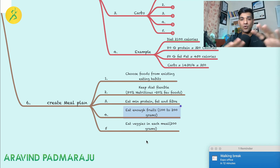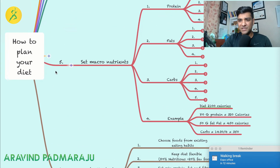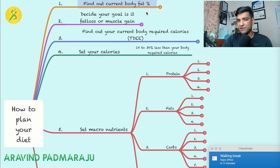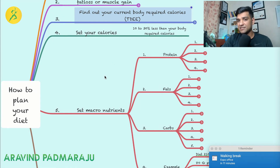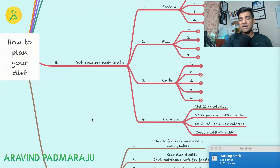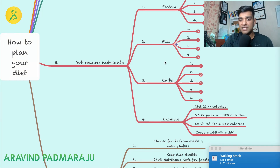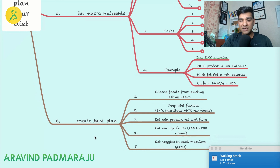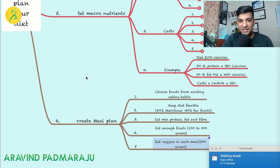To recap: Step 1 — find your current body fat percentage and decide your goal (fat loss or muscle gain). Step 2 — calculate your body's required calories and set a calorie target accordingly (deficit for fat loss, surplus for muscle gain). Step 3 — set your macronutrients: protein, fats, and carbs. Step 4 — create a meal plan using existing foods, keeping it flexible, consuming minimum protein, fats, and fiber, and eating enough fruits and veggies.